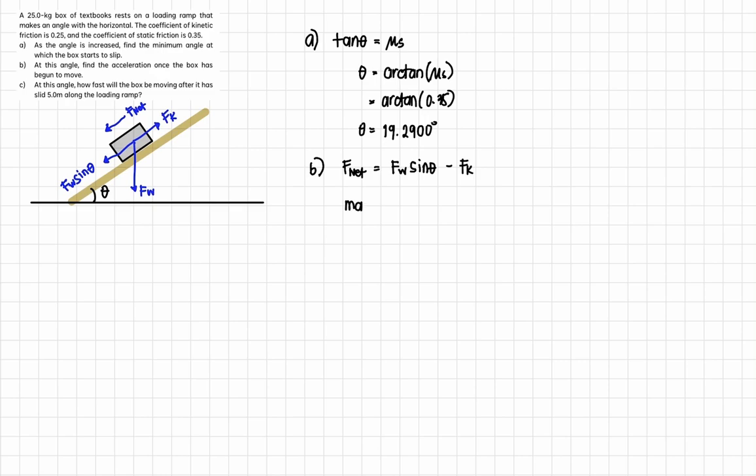So F net is equal to FW sine of theta minus the frictional force, kinetic friction. So M A net force is equal to M G sine of theta minus the kinetic friction mu K FN. But what is FN equal to? Now, this is the body's forces parallel to ramp.